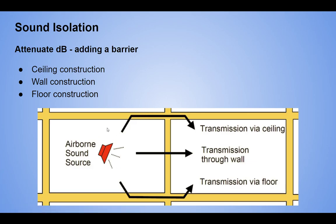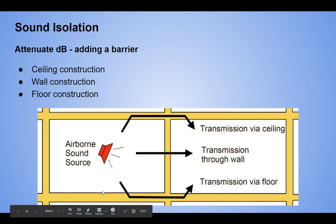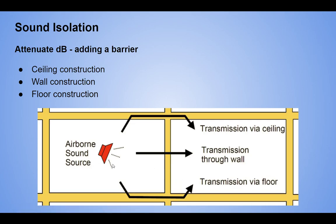We've got airborne sound here. The source is our air handling unit, some sort of mechanical equipment, and we have transmission through the wall — up and above, and down below. This is usually the flanking path detail when your wall does not go all the way to the structure above and is not resiliently sealed. If your equipment is sitting directly on the slab, you can have vibration flanking on that path.